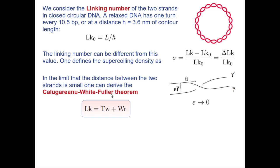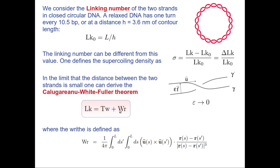To get this result, we apply the Calugareanu-White-Fuller theorem. This topological number — the linking number — splits into two quantities: one is the twist and the other is the writhe. The twist, which we know already, is the integral of omega_3, as we have seen in the previous slides and previous lecture. The writhe is a new quantity.